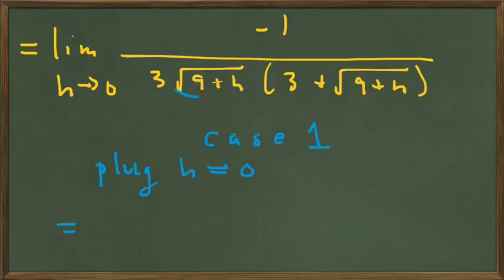Noticing that this square root becomes 3, and we have the same square root over here, so it's also 3, so we have minus 1 over 3 times 3 multiplied by 3 plus 3, or minus 1 over 9 times 6, minus 1 over 54.